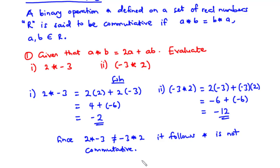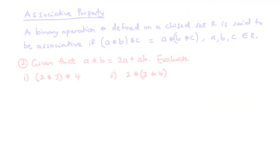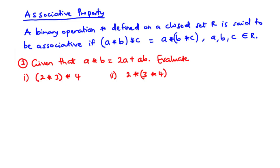Now let's move on to the next property: the associative property. For the associative property, we say that a binary operation star defined on a closed set R is said to be associative if (A star B) star C is equal to A star (B star C), where A, B, and C are all members of the set R. We want to validate whether (2 star 3) star 4 is equal to 2 star (3 star 4). We will evaluate the two and compare. If they are the same, we conclude that star is associative; if not, then star is not associative.